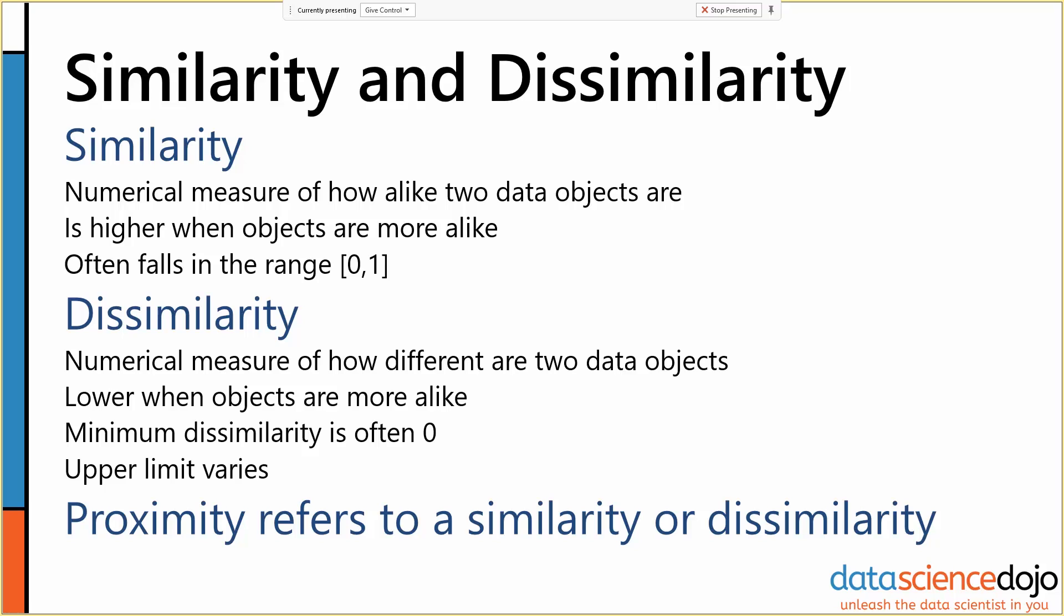And we'll use the term proximity to refer to either how similar or how dissimilar objects are. So objects that are close will have a high similarity or a low dissimilarity, and if objects are far, they have a low similarity and a high dissimilarity.